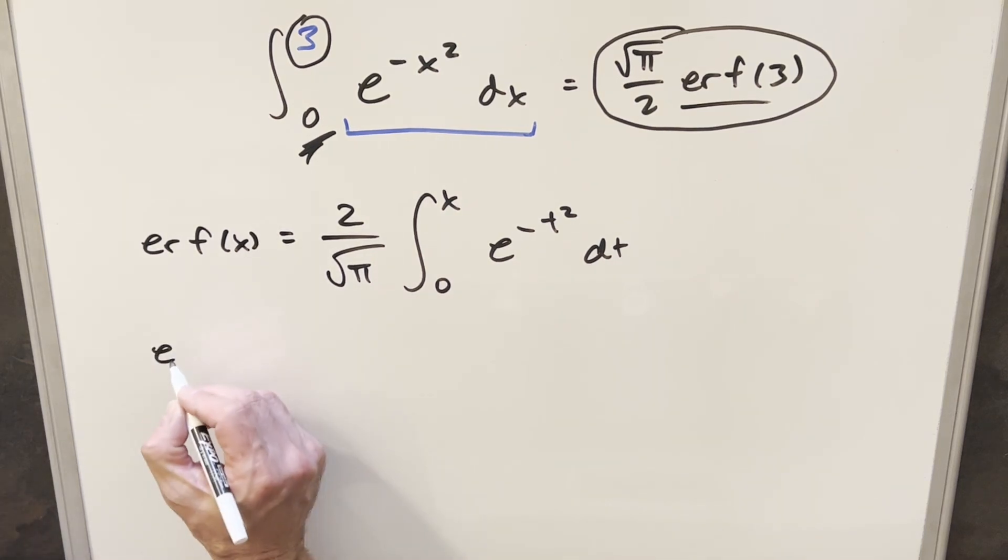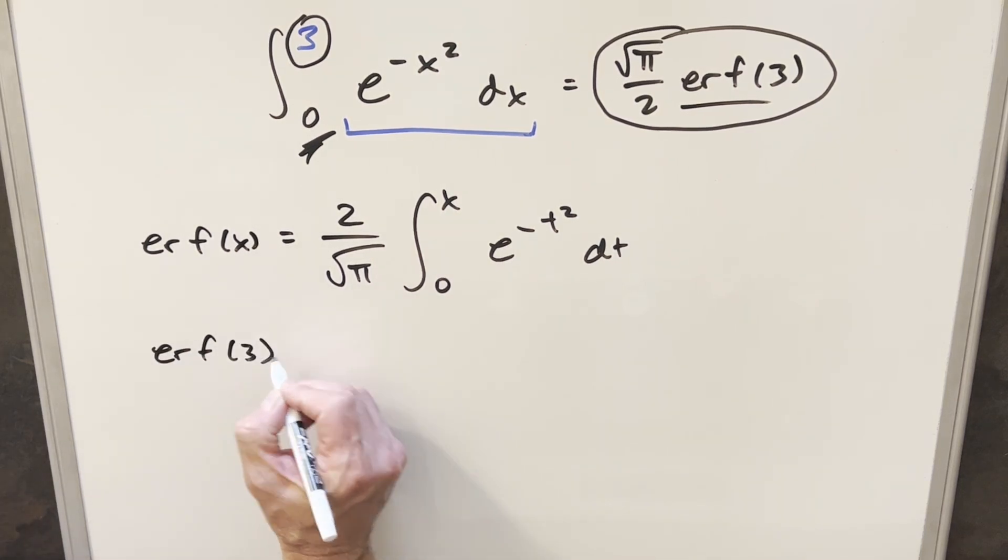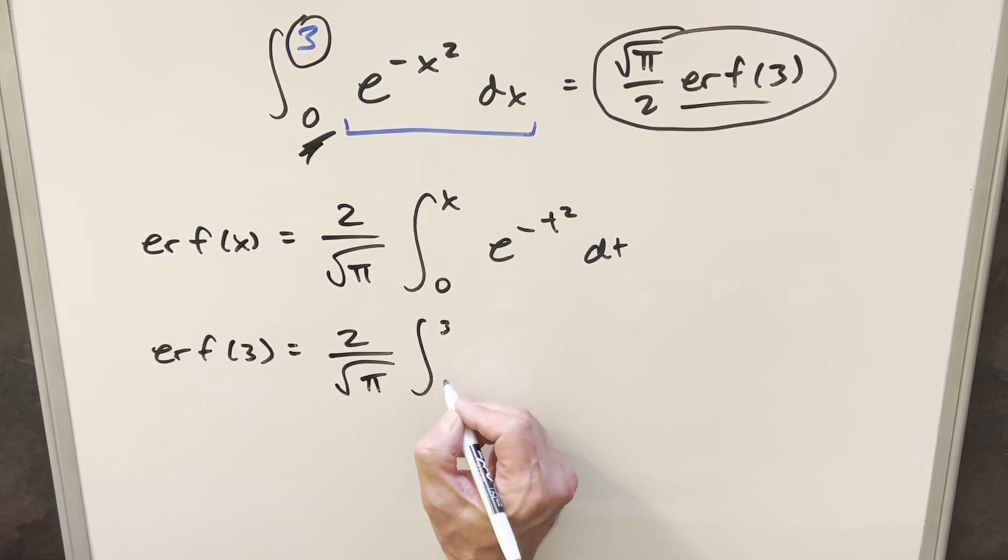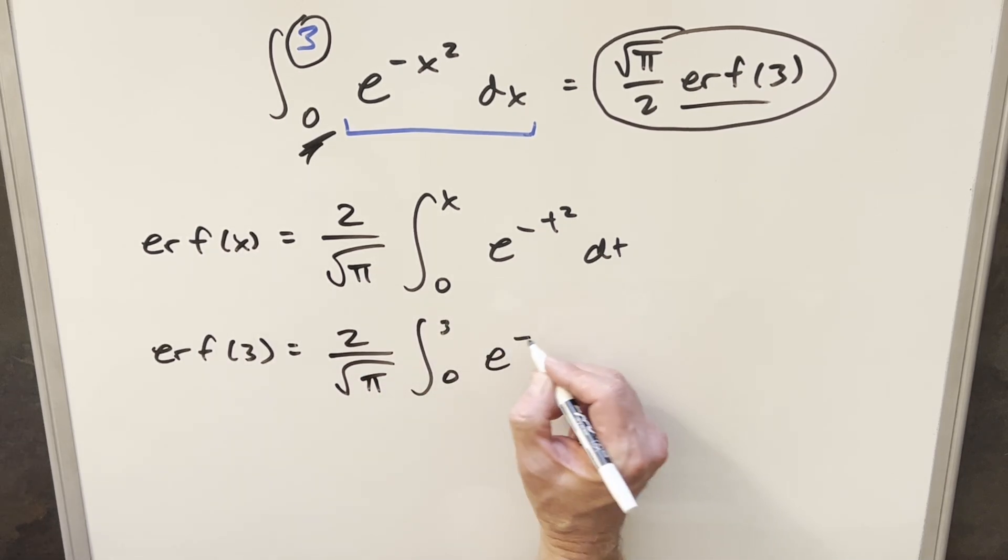So then if we input a 3 in here, we want to look at what is the error function at 3. Well, all we need to do is just plug into this upper bound, and we have this integral from 0 to 3 e minus t squared dt.